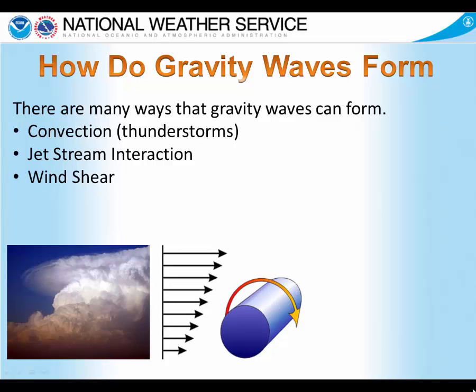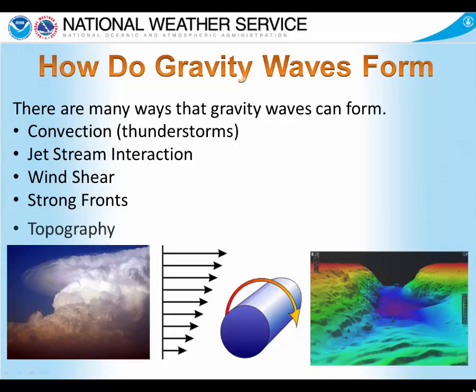We can get gravity waves forced by strong fronts, either near the surface or in the upper levels of the atmosphere. And, as we showed in one of the satellite pictures, topography or mountains can also start gravity waves.